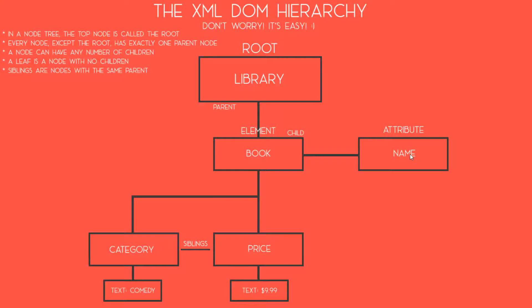And if we take a look to the right, we can see one of its attributes. In this case, it only has one attribute, but it can in fact have multiple ones — this attribute being the name attribute. If we look at the child nodes of the book element, these being the two elements beneath it, we can see that there are two more elements: category and price.